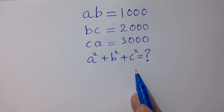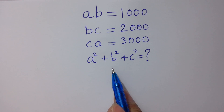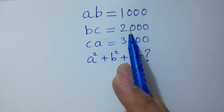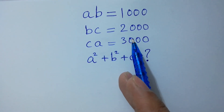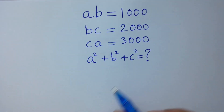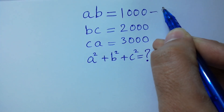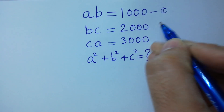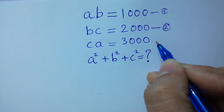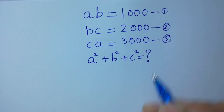Hello friends. Find the value of A squared plus B squared plus C squared if AB equals 1000, BC equals 2000, and CA equals 3000. Let this be the first equation AB equals 1000, BC equals 2000 is the second equation, and CA equals 3000 is the third equation. Let's have a solution.